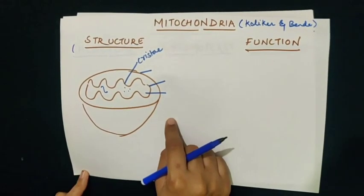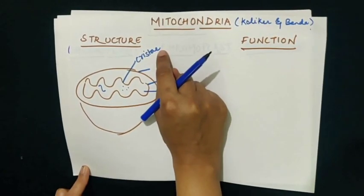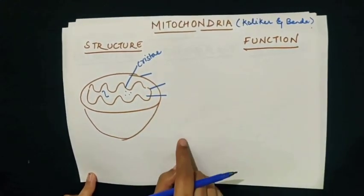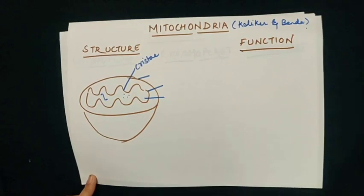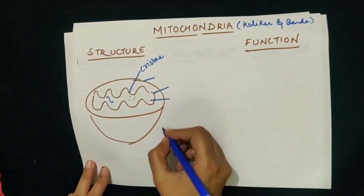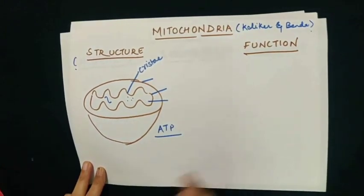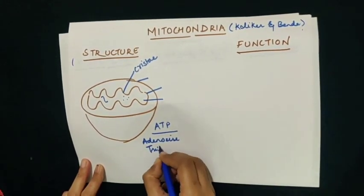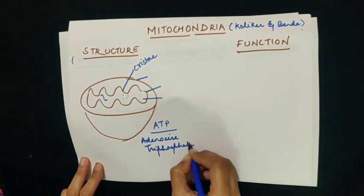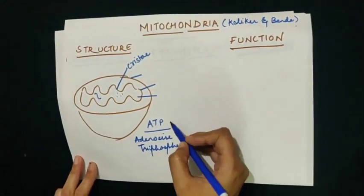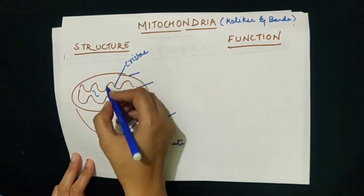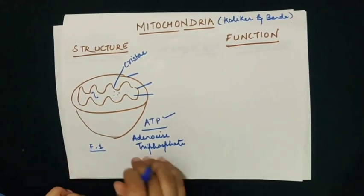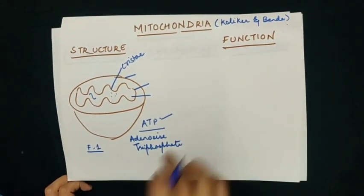Now let us discuss about the function of these cristae, or why the inner membrane of mitochondria is deeply folded. The inner membrane of mitochondria is deeply folded to provide a large surface area for the production of ATP — adenosine triphosphate. These cristae have F1 particles, also called oxysomes, and these oxysomes are the site of ATP synthesis.